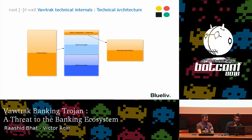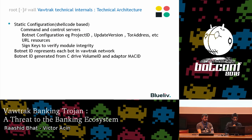This is how Vawtrak looks during the initial stage of infection. From the packed binary, we get the static configuration — which will be discussed next — and either a 32-bit or 64-bit executable. Either one is then relocated in the main binary in a different memory region.